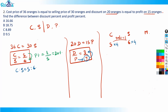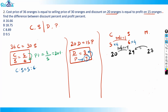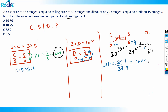With c = 20 and s = 24, profit is 4, so discount is 3. Since selling price is 24 and discount is 3, mark price becomes 27. Now discount percentage equals discount on mark price: 3/27 = 1/9, which is 11.11%.